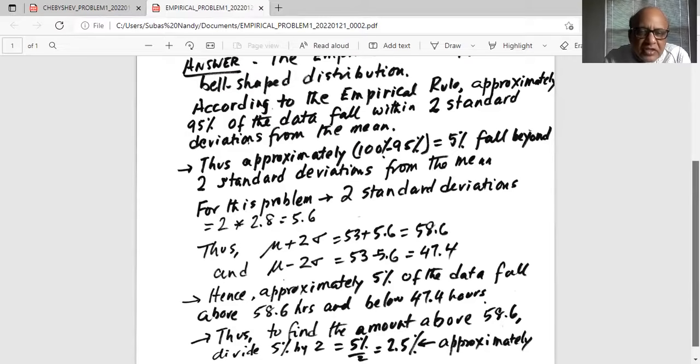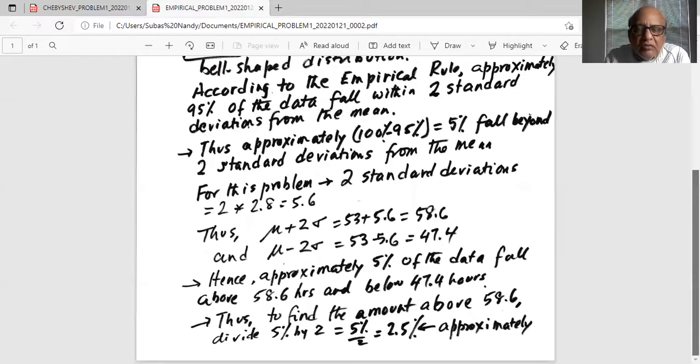What is left in the two edges or in the two tails is 100 minus 95%, which is 5%. Hence, approximately 5% of the data will fall above 58.6 hours and below 47.4 hours. So, we are only interested in finding the amount of data above 58.6. So, we will take the 5% in the two tails, in the right and in the left, and divide it into two equal parts. That is, approximately 2.5% of the data will fall above 58.6 hours.